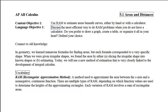We have some vocabulary, and the first term is RAM, which is short for Rectangular Approximation Method. This is a method used to approximate the area between the x-axis and a non-negative continuous function. There are multiple types of RAM, depending on which function values are used to determine the heights of the approximating rectangles, and each variation involves a sum of rectangular areas.